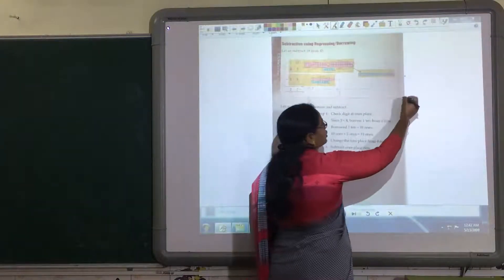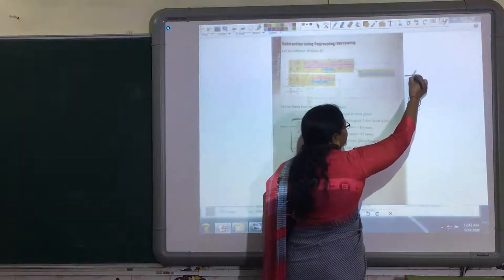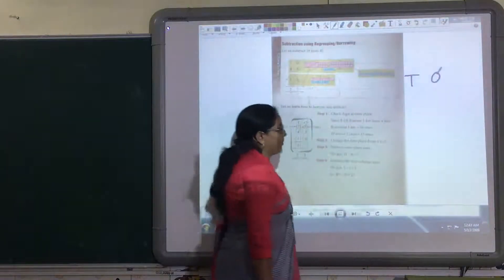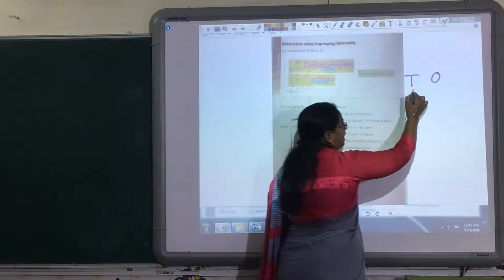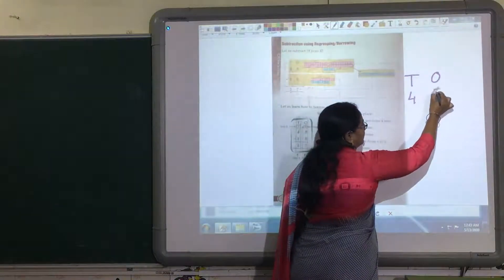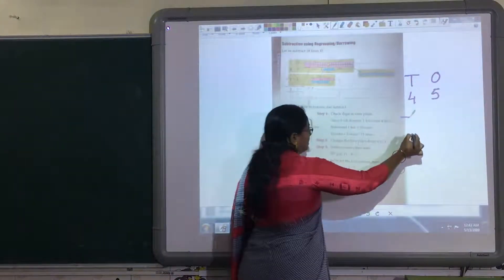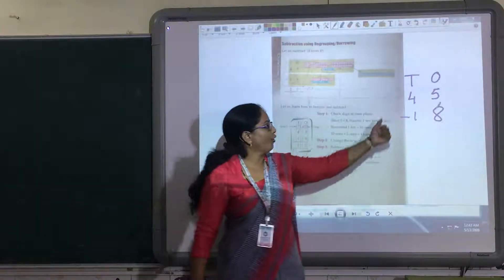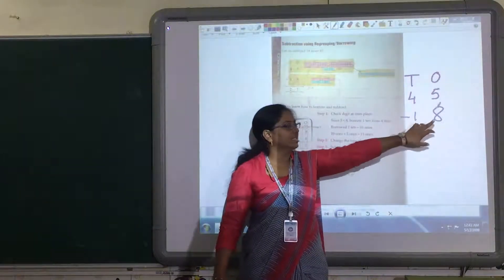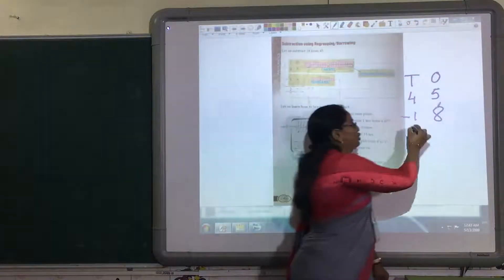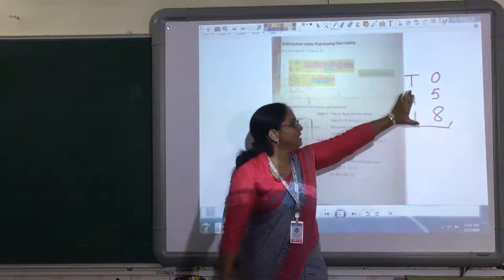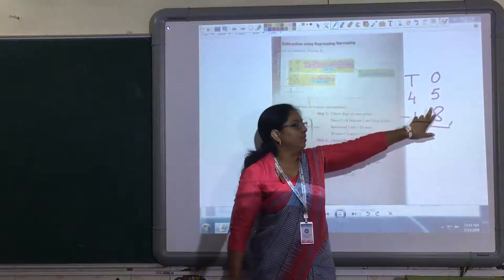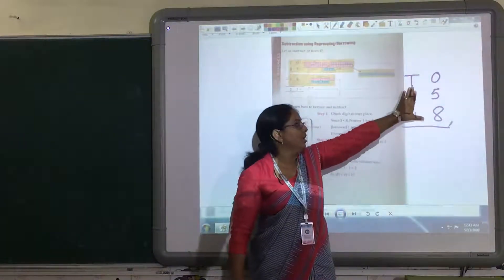I will show you how to solve this sum. Now, this is 10's column and this is 1's column. Now, we are going to write 45 minus 18. We are going to solve first 1's column. In 1's column, 5 is given and 8 is given.